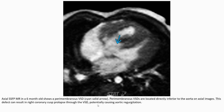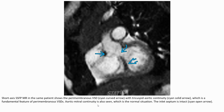On this echocardiography image, the perimembranous VSD is located directly inferior to the aortic valve on the parasternal image. The perimembranous VSD shows aortic-tricuspid continuity, which is a fundamental feature of perimembranous VSD. The aortic-mitral continuity is also seen, which is the normal situation. The inlet septum is intact.